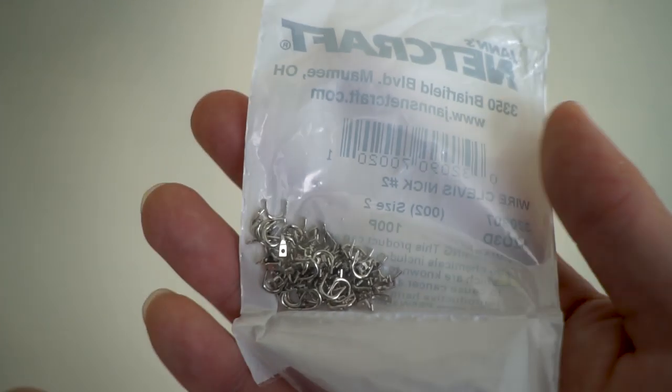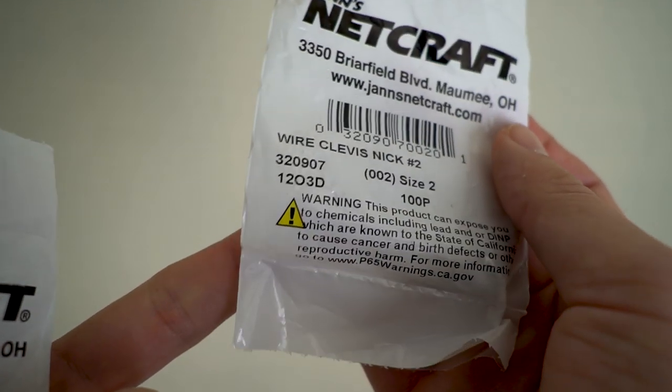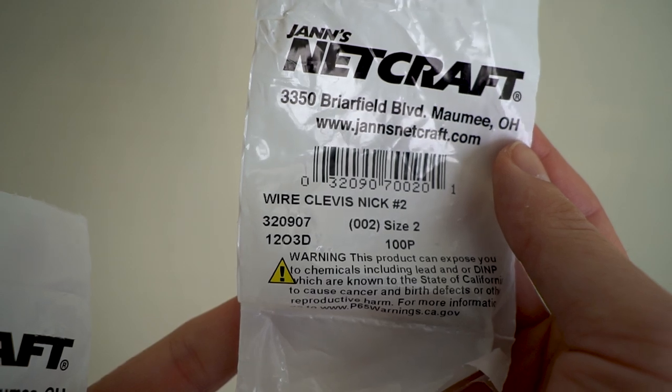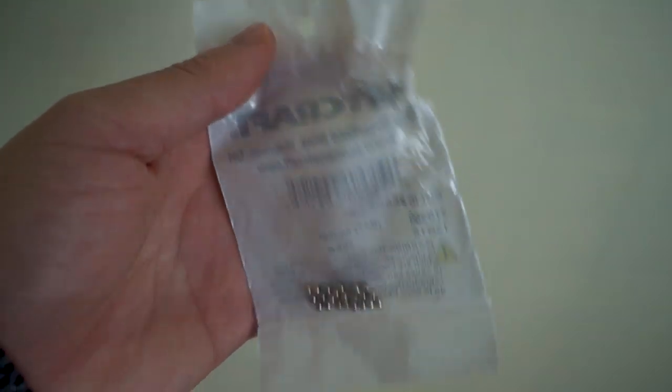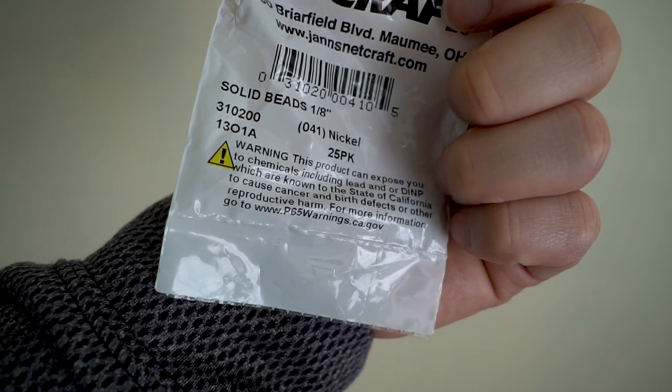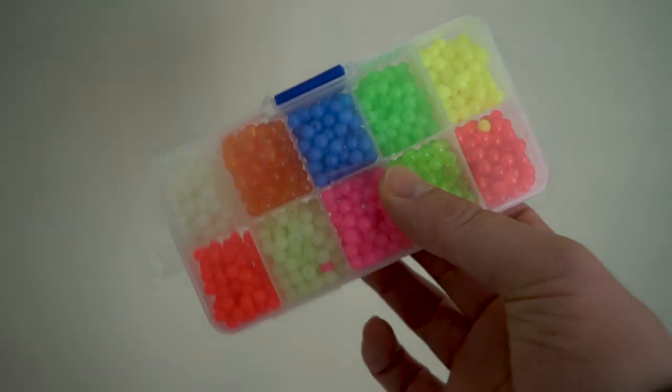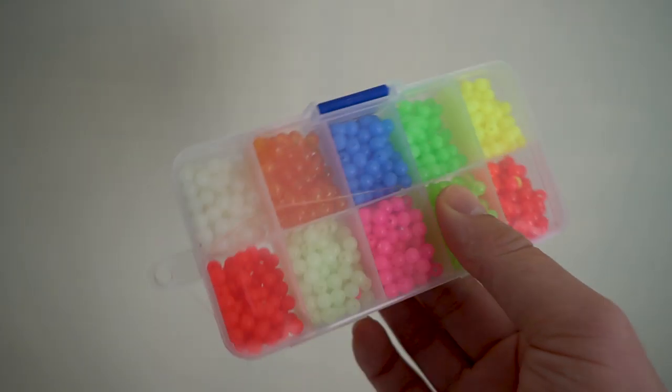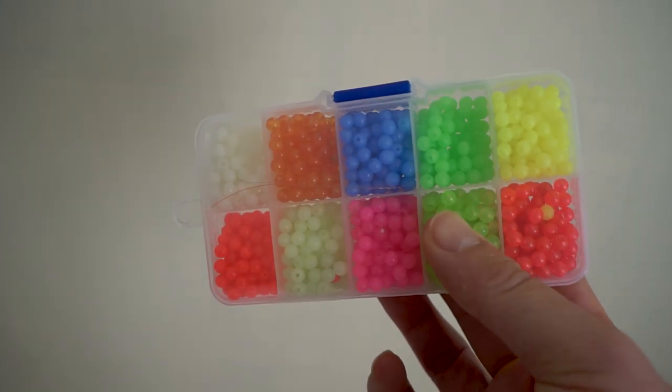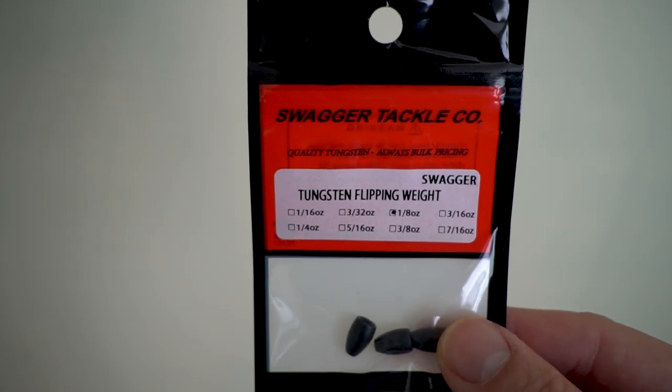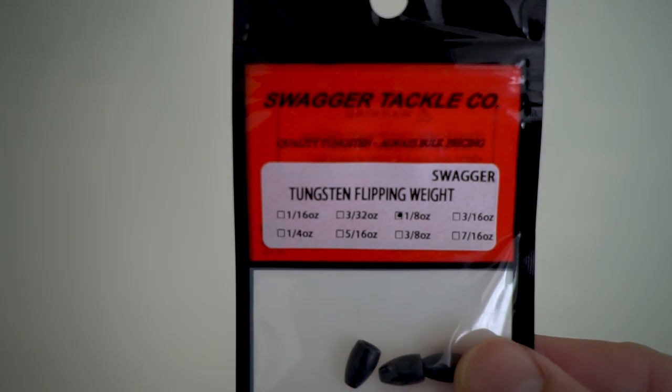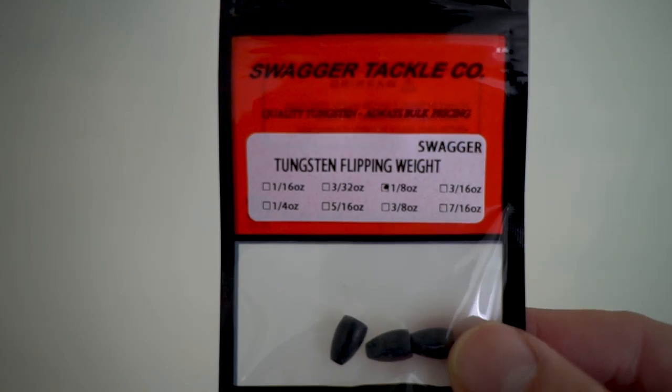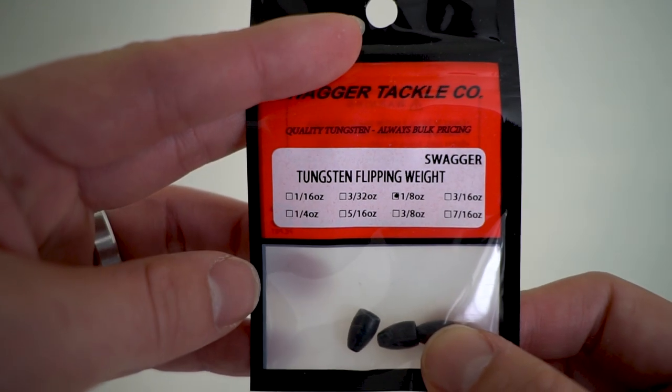You need the right clevises - these are what it sits on to swing on the wire, and this is size 2 as well. You'll need some tiny beads, this is 1 1/8 inch nickel, or you can opt for plastics or glass beads. You need some weights - I got Swagger Tackle tungsten cone head weights, their flipping weight at 1/8th ounce.